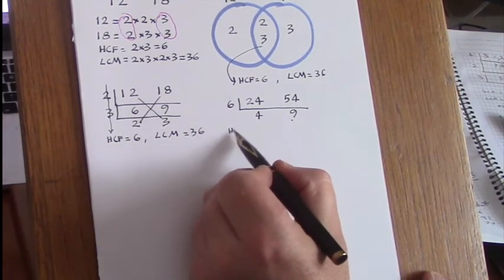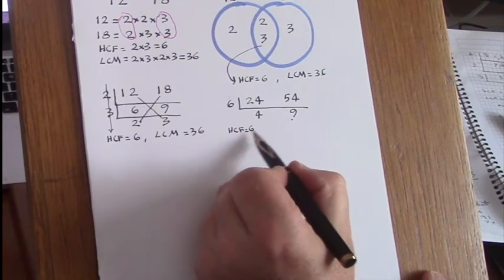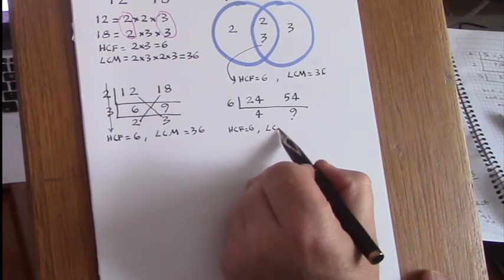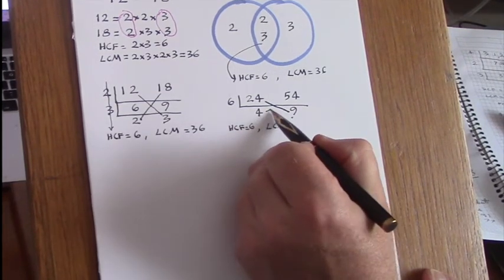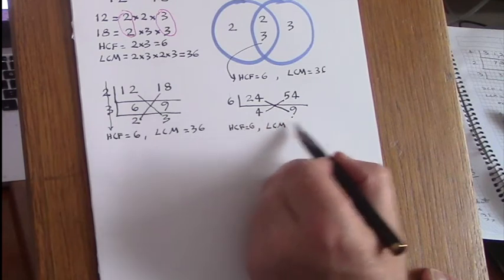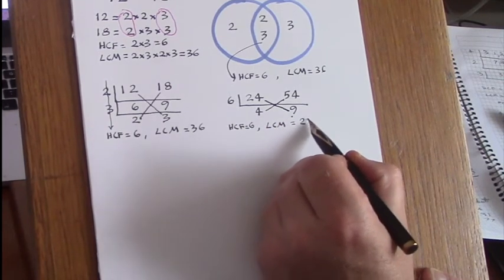The highest common factor is 6, and the LCM is found by cross-multiplying, 9 times 24 or 4 times 54, that one's easier, that's 216.